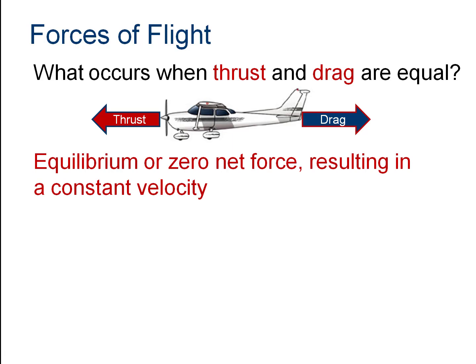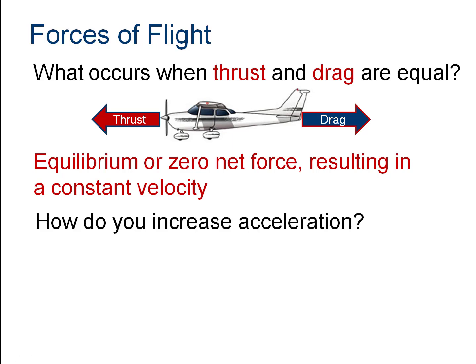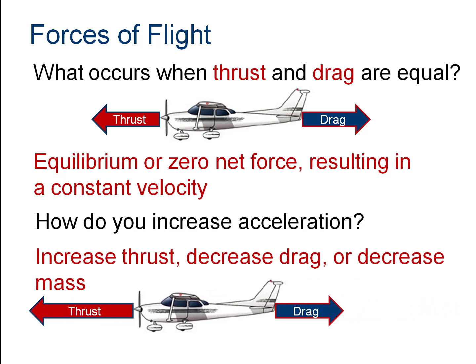When thrust and drag are equal, I'm not accelerating — I'm moving at a constant velocity. To increase acceleration, there are really two ways: the obvious way is to create more thrust, and the less obvious way is to decrease drag. When we learn to fly in a simulator, we'll talk about both of those scenarios.